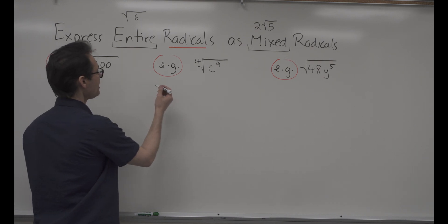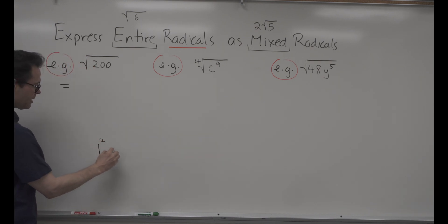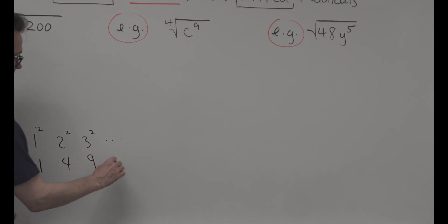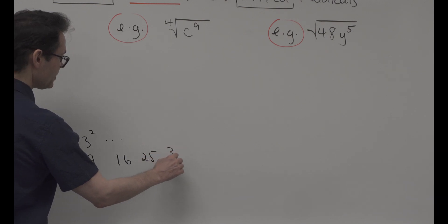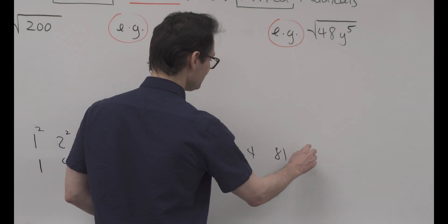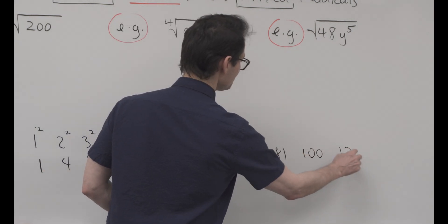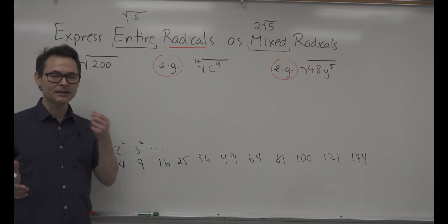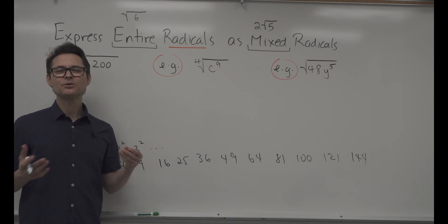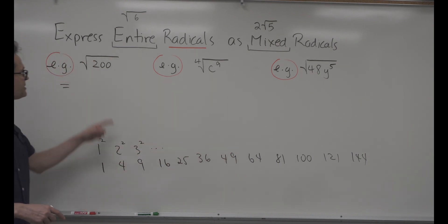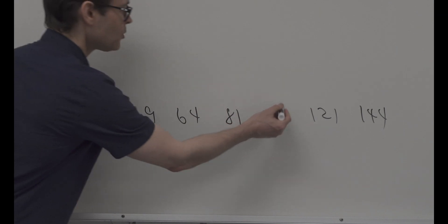Perfect squares are: 1 squared is 1, 2 squared is 4, 3 squared is 9, then 16, 25, 36, 49, 64, 81, 100, 121, 144. Know your first 12 perfect squares. So you can ask: which is the biggest perfect square that goes into 200? The biggest one is 100. So 200 equals 100 times 2.